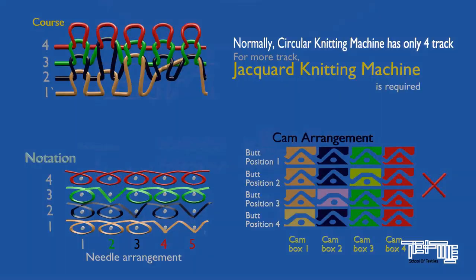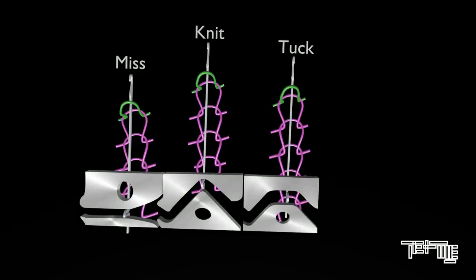In knitting, basic loops are knit, tuck and miss loop. In a knit loop, needle rises to its clearing highest position which is the highest peak for the needle. In the tuck loop, the needle does not raise its peak and cannot attain a clearing position. And in the miss loop, needle does not rise at all.